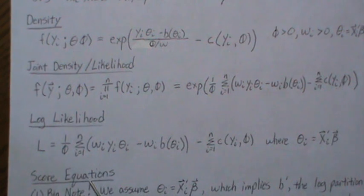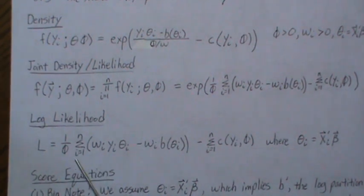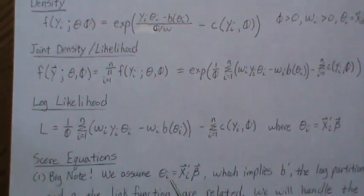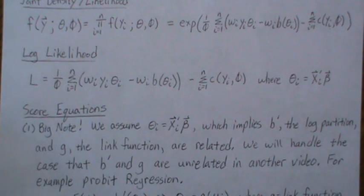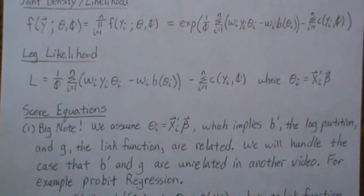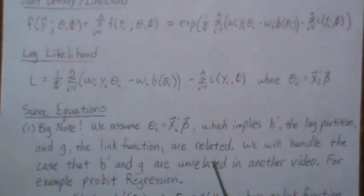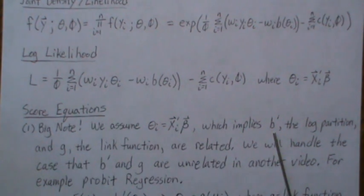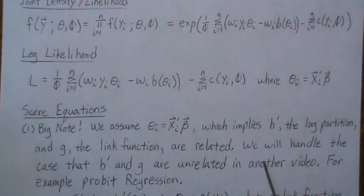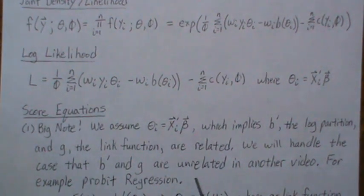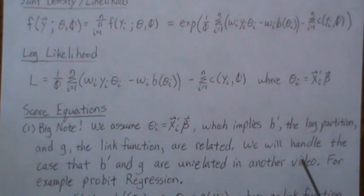The score function or score equations is where we take the derivative of this with respect to the betas. A big note here: we assume we're modeling the canonical parameter with this linear combination, and as noted in previous videos, this implies that the log partition and the link function are related. Specifically, the first derivative of the log partition and the link function are inverse functions of each other. We will handle the case that the log partition and g are unrelated in another video — for example, probit regression.